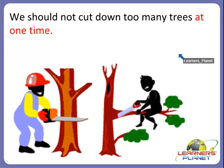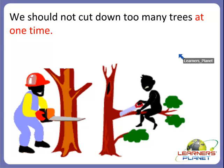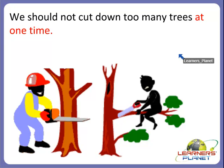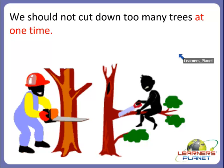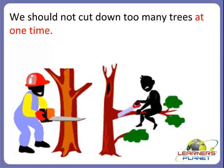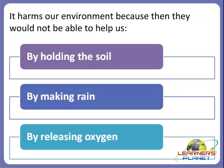If we cut too many trees at one time, we would not be getting oxygen gas. It will not reduce soil erosion. And the trees which help in making rain would not be able to make rain. So it will be very harmful for us. We should not cut down too many trees at one time. What happens if we cut down too many trees? It harms our environment.